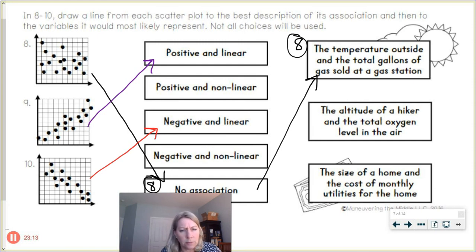All right. Let's look at the next one down. The altitude of a hiker and the total oxygen level in the air. Well, I know that I don't know a lot about sciences, but I know enough to know that as you go up higher and hike in higher elevations, there's less oxygen. So altitude higher, oxygen lower. So I'm saying opposites. So it's negative and linear. So that would match number 10. So I'm going to connect that with a red line over to here. So that's number 10 over here. And this one would be connected to number 10 as an example.